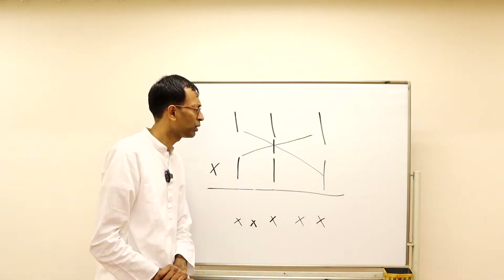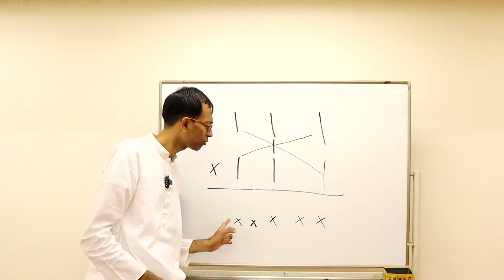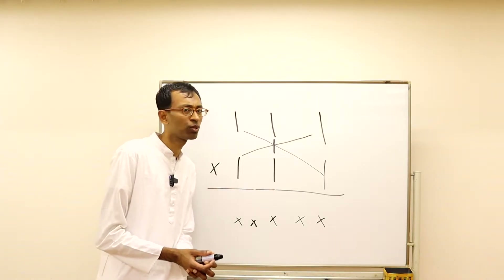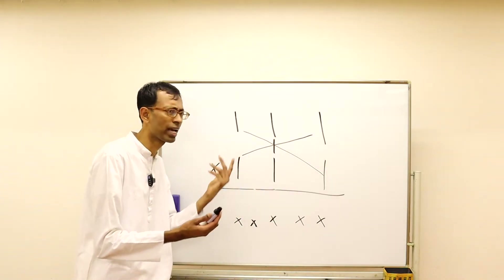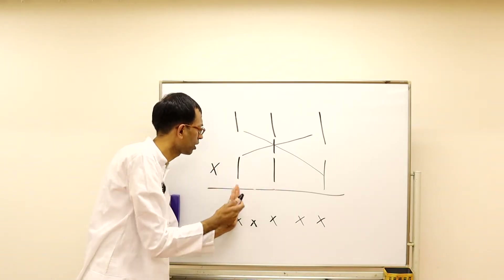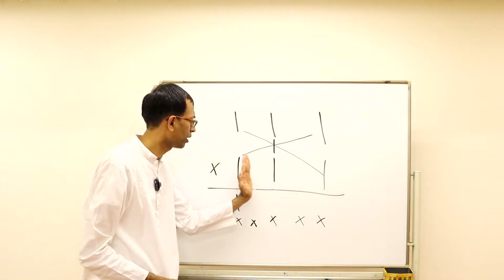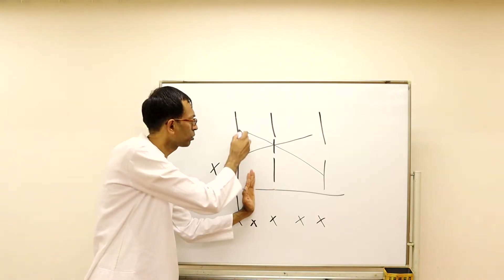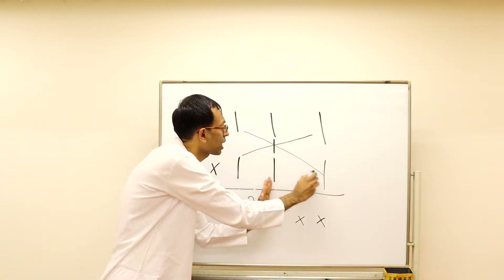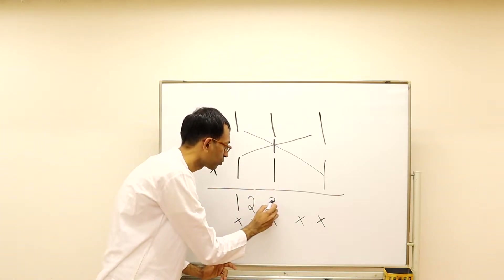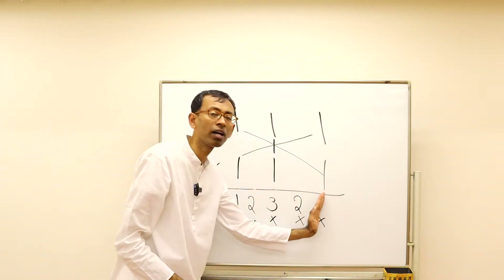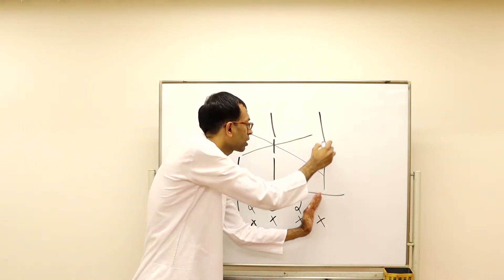Pause the video and see if you can do this multiplication by yourself. We can do this together — from left to right since there are no carries. First, vertical multiplication: one times one is one. Then we shift the center: one times one plus one times one is two. Then the middle: one times one plus one times one plus one times one is three. Then shifting: one times one plus one times one is two. Finally, vertical on the right: one times one is one.